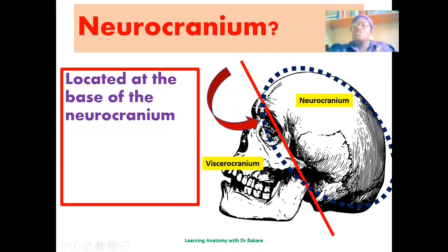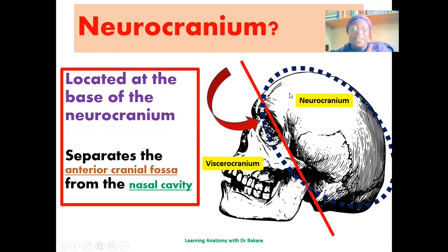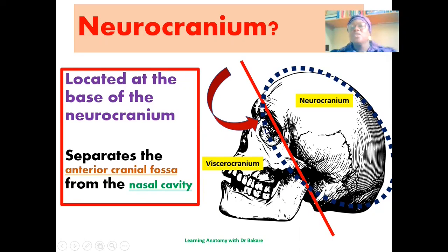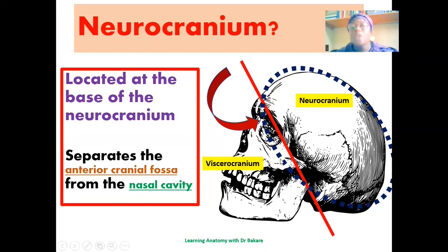Because the ethmoid bone forms part of the structural alignment of the entire circumference of the neurocranium, it is taken as part of the neurocranial bones. It is located around the anterior region, separating the anterior cranial fossa from the nasal cavity. It forms part of the structural component of the neurocranium because it forms part of the alignment of the neurocranium, even though it is located at the base.